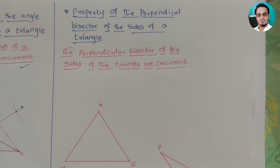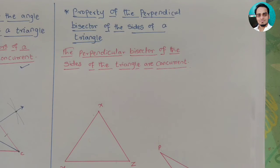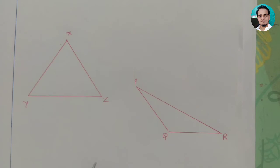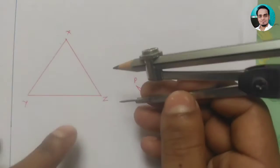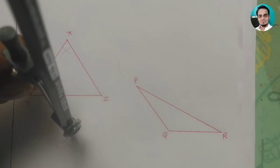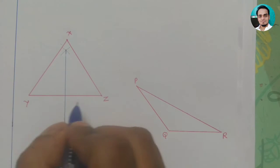Similarly, there is a property of the perpendicular bisectors of the sides of a triangle: the perpendicular bisectors of all three sides of a triangle are also concurrent — they also meet at one single point. Let's draw this. We use a compass on side YZ and draw the perpendicular bisector of YZ.